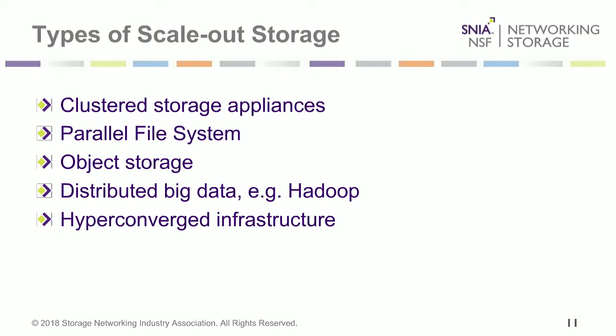There are different types of scale-out storage. First, clustered storage appliances — such as EMC PowerMax, HPE 3PAR, NetApp FAS, or EMC Isilon — are sets of appliances with an internal network that connect together to look like one easy-to-manage storage system. They can do block, file, or object storage, or combinations. They scale out to multiple nodes providing one large storage system.